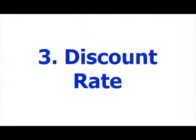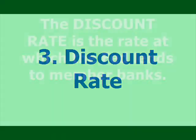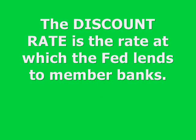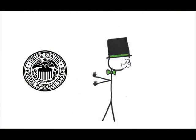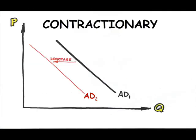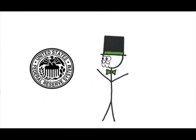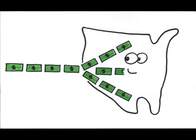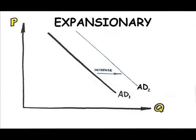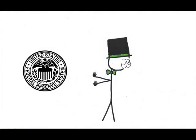The third tool, the discount rate, is the interest rate at which commercial banks can borrow from the Fed. This one is pretty common sense. At a higher interest rate, banks are less inclined to borrow, which slows the economy — contractionary policy. At a lower interest rate, banks are more inclined to borrow, putting more money in circulation and stimulating the economy — expansionary policy. Here's the kicker, though: sometimes, even at very attractive rates, banks don't want to borrow from the Fed.